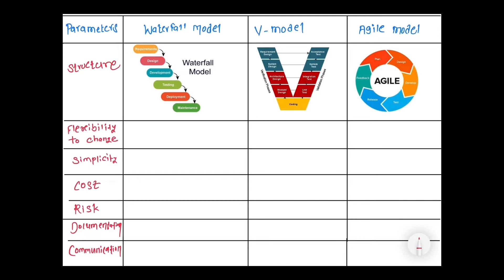The second parameter of difference is the flexibility to change. In the waterfall model there is very less flexibility to change, because once work is assigned we can't change it. In V model there is intermediate flexibility, whereas in agile model there is very high flexibility to change.